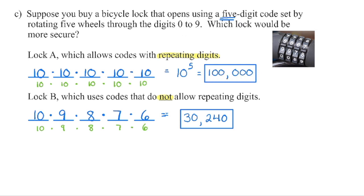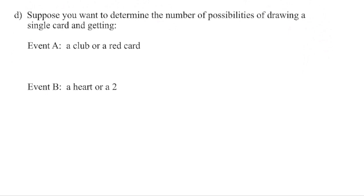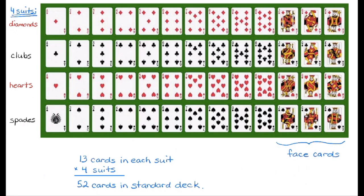Because there are far more combinations with Lock A, it is the more secure lock. Our last example involves a standard deck of playing cards. There are four different suits: two red — diamonds and hearts — and two black — clubs and spades. There are 13 cards within each suit: three face cards (jack, queen, king), an ace, and cards 2 through 10, giving 13 cards per suit and 52 cards total. With three face cards in each of four suits, there are 12 face cards in total.